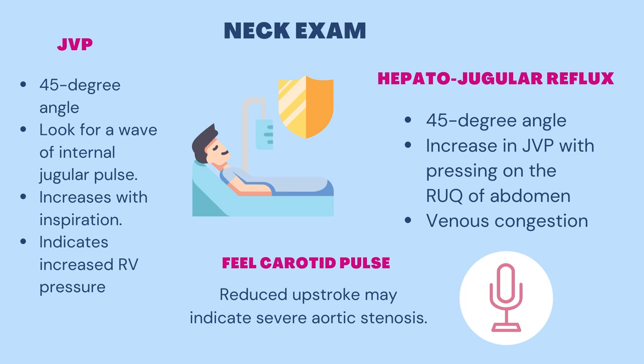The internal jugular vein is more of a direct measurement of right atrial pressure. Observe the height at inspiration. Right atrial pressure is measured in centimeters of water and estimated by adding 5 centimeters to the height of the jugular pulse above the sternal angle of Lewis.